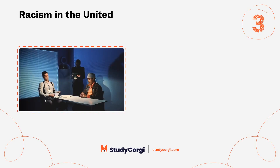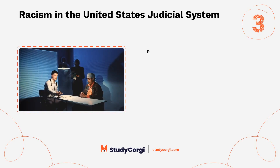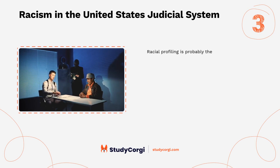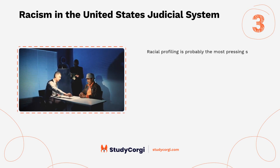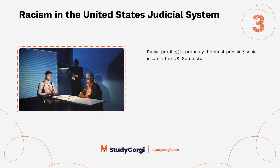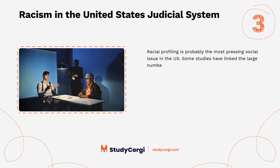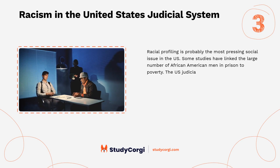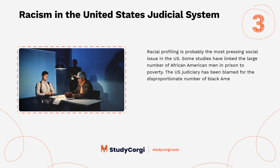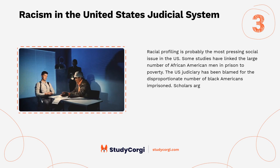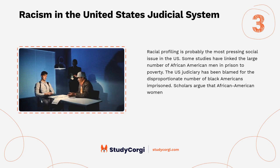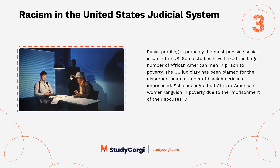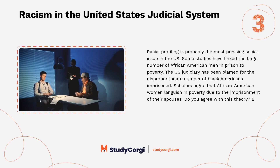Racism in the United States Judicial System. Racial profiling is probably the most pressing social issue in the U.S. Some studies have linked the large number of African American men in prison to poverty. The U.S. judiciary has been blamed for the disproportionate number of black Americans imprisoned. Scholars argue that African American women languish in poverty due to the imprisonment of their spouses. Do you agree with this theory? Explain your opinion.